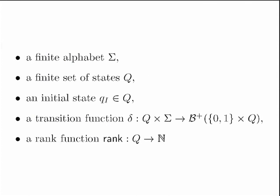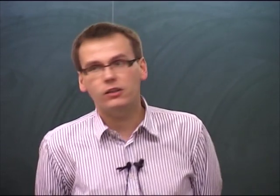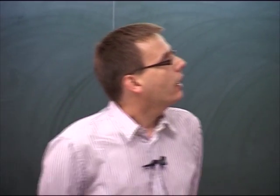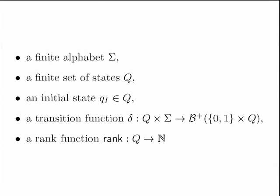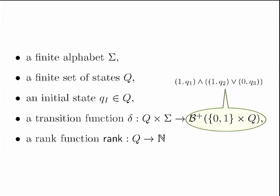My model of automata is alternating automata on trees using the parity condition. The transition function takes a state and a letter and gives a positive Boolean combination of pairs of direction and state. So it's something like: you either go right in state q1, or you go right in state q2 and left in state q3.